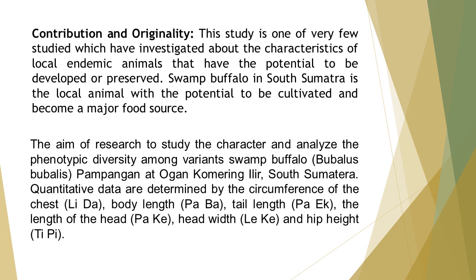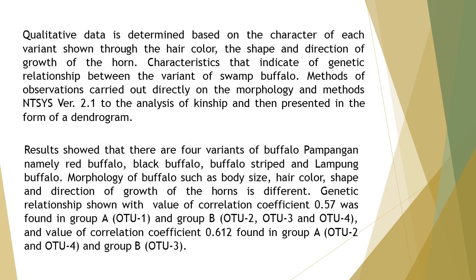Quantitative data are determined by the circumference of the chest, body length, tail length, the length of the head, head width, and hip height. Qualitative data is determined based on the character of each variant shown through the hair color, the shape and direction of growth of the horn. Characteristics set indicate a genetic relationship between the variants of Swamp Buffalo. Methods of observations were carried out directly on the morphology and methods in NTSYS 2.1 for the analysis of kinship.